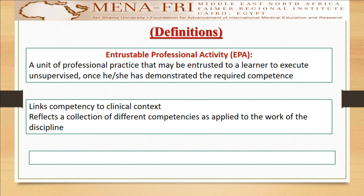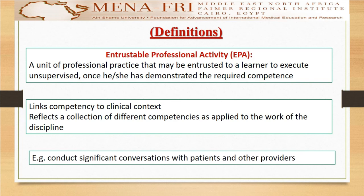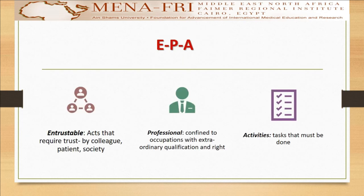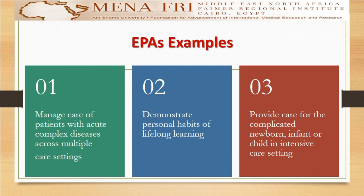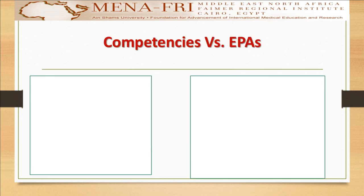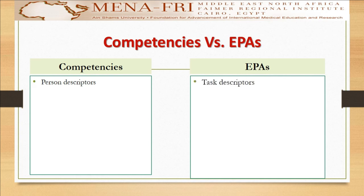What about the Entrustable Professional Activity, or EPA? It's a unit of professional practice that may be entrusted to a learner to execute and be supervised, once he or she has demonstrated the required competency. EPA links competency to the clinical context. It reflects a collection of different competencies as applied to the work of the discipline, like conducting significant conversations with patients and other providers. EPA is an entrustable act that requires trust by colleagues, patients, or society, and is confined to a physician with the appropriate qualifications.